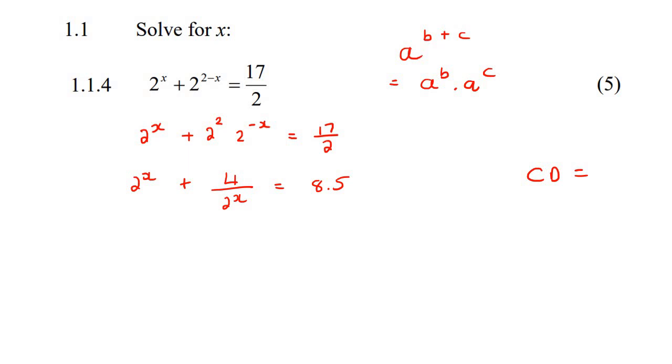So now the lowest common denominator is just going to be 2 to the x. So what that means is that we're going to have to multiply this part by 2 to the x, and this part by 2 to the x, because what you do to the bottom, you do to the top.